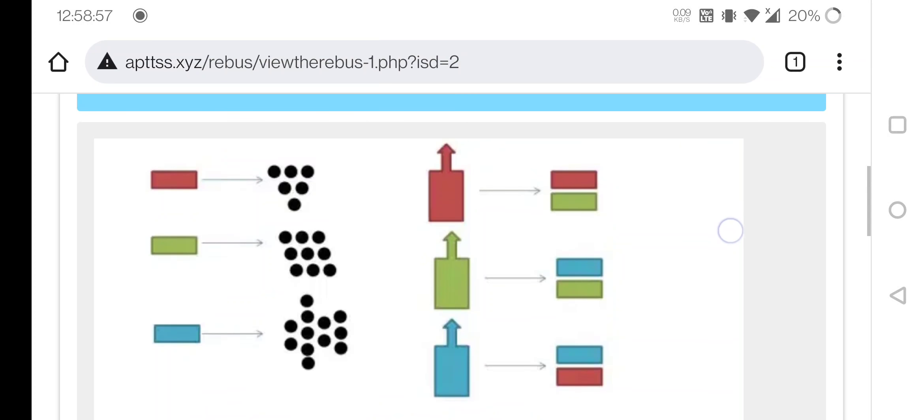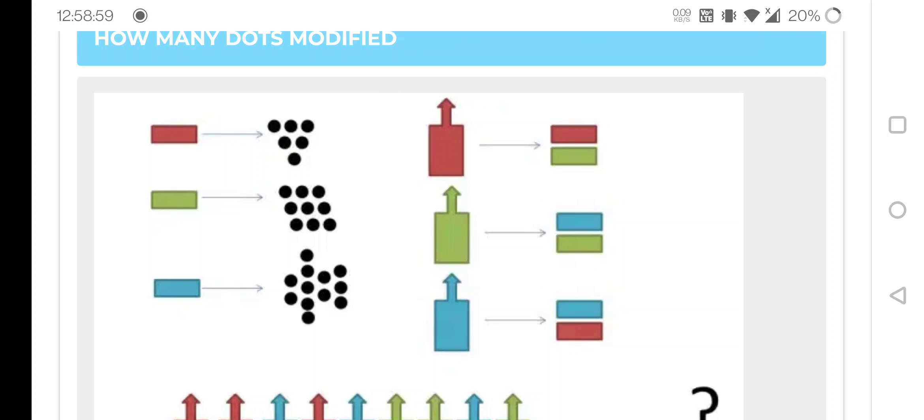In this puzzle, you can see that red indicates six dots, green indicates nine dots, and blue indicates twelve dots. This symbol equals the sum of these two, meaning they're added together.